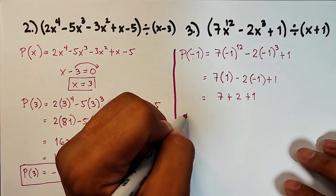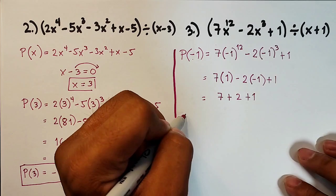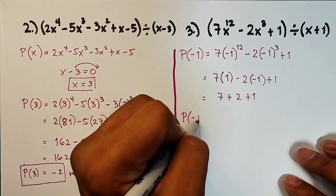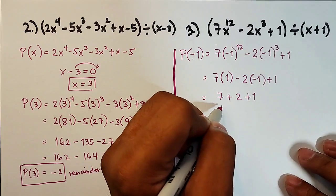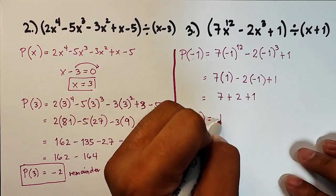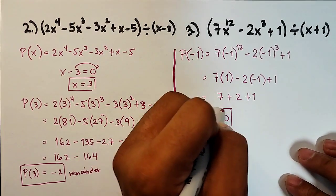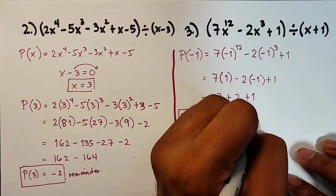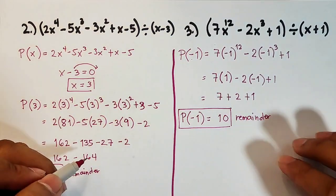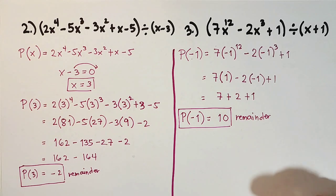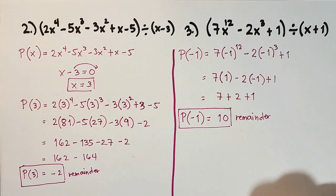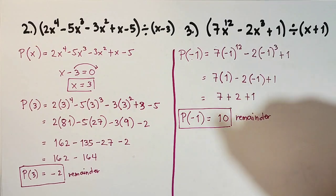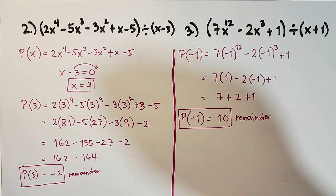Simplifying: 7 times 1 is 7, and negative 2 times negative 1 is positive 2, plus 1. So p of negative 1 equals 7 plus 2 plus 1, which equals 10. This is the remainder when you divide 7x to the 12th minus 2x cubed plus 1 by x plus 1.